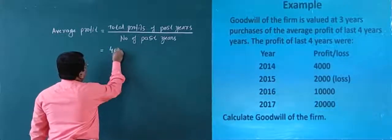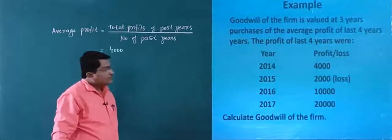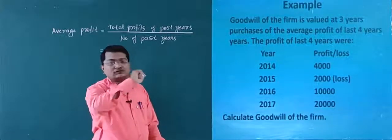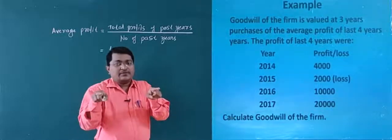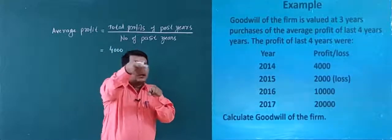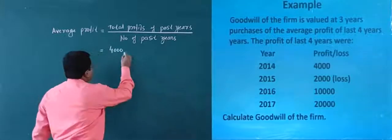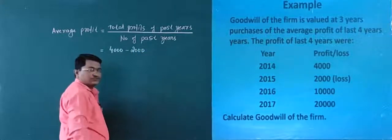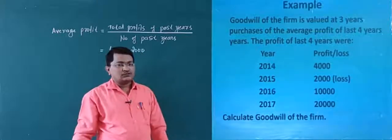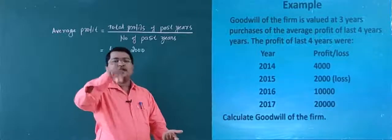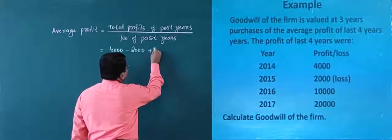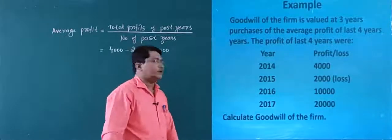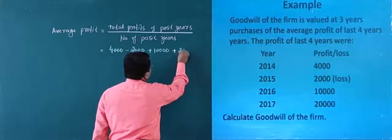In 2014, it is profit: 4,000. In 2015, is there profit or loss? There is a loss. Loss means we need to deduct — it is minus 2,000. In 2016, there is profit, so we add plus 10,000. In 2017, there is again profit, so we add plus 20,000.